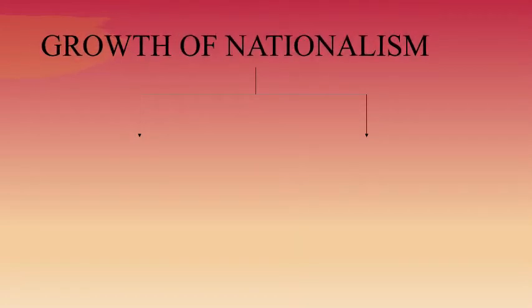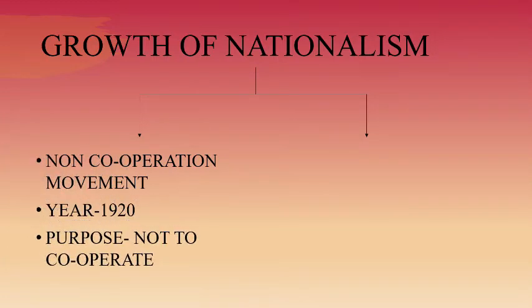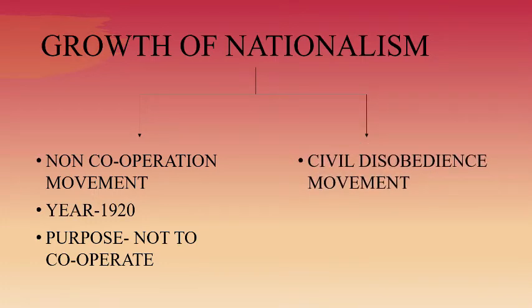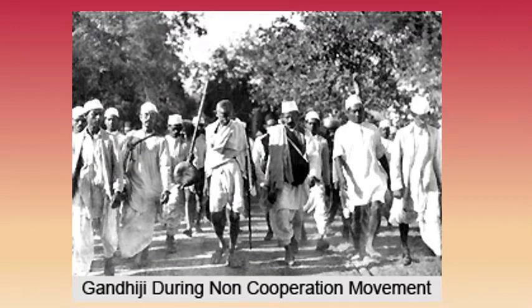In this chapter, two important movements of the British period have been discussed. The first is the Non-Cooperation Movement, which took place in 1920. The purpose of this movement was not to cooperate with the British. The second movement is the Civil Disobedience Movement, which took place in 1930. The purpose of this movement was to break the unjust laws made by British rulers. In this part, we will discuss the Non-Cooperation Movement.